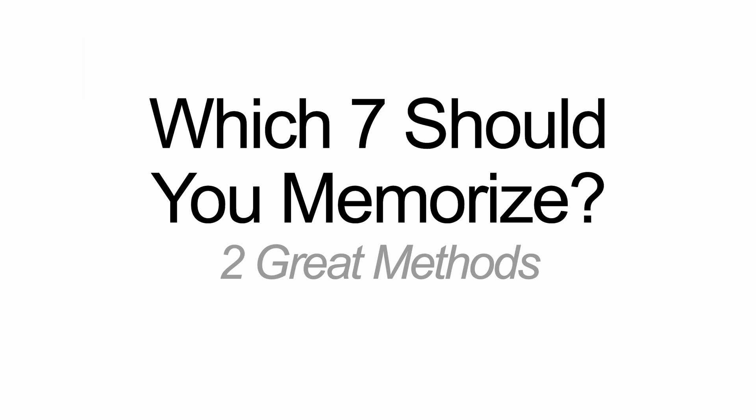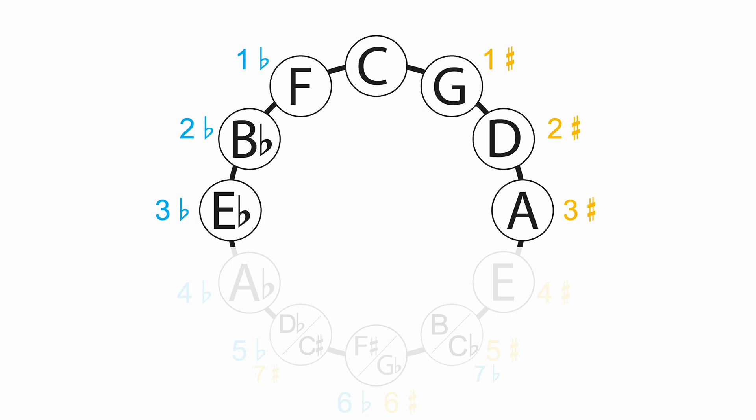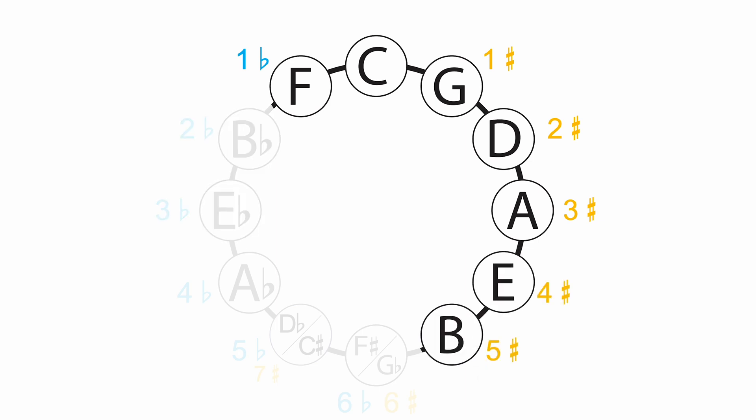Which seven should you memorize? I have two great methods — there's no wrong way. One is to memorize the top half of the circle of fifths: all of the major keys up to three flats or three sharps. Another great way is to memorize all of the keys that are natural — going from F to B, so all of the keys that have a natural as the root. With that, this is also the order of sharps: F, C, G, D, A, E, B. Going counterclockwise around the circle of fifths gives you the order of flats: B, E, A, D, G, C, F — the circle of fifths built from the order of flats and sharps.